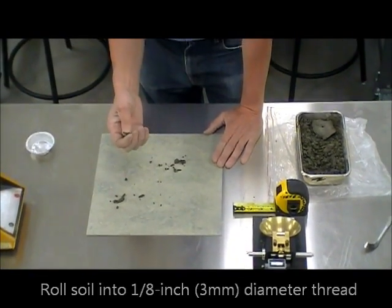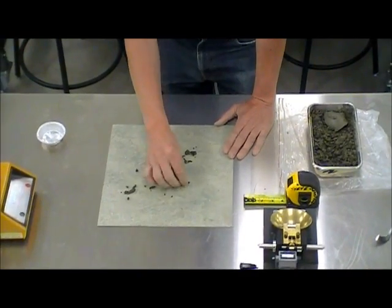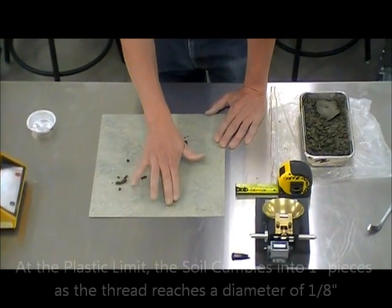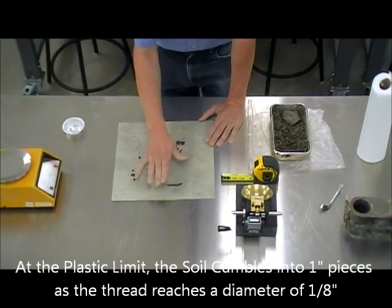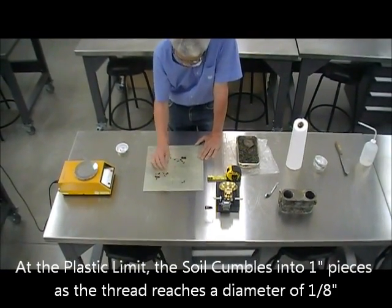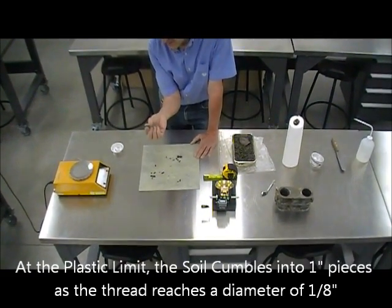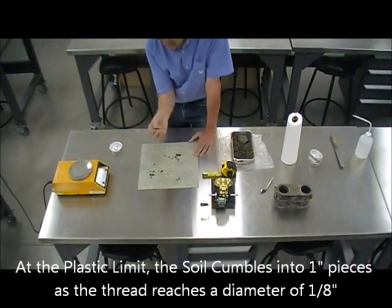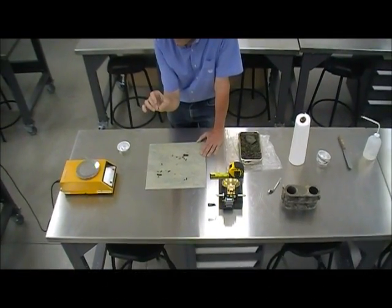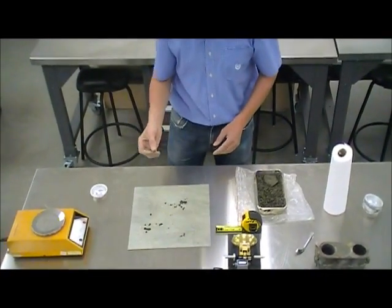If the soil is too dry, it will crumble before it reaches one inch in length. In this case, we're slightly on the wet side so that we're able to achieve a length exceeding the inch. The diameter of this thread is one-eighth of an inch, or approximately three millimeters in diameter.